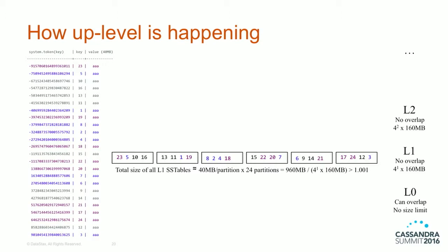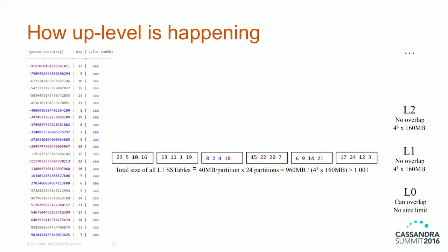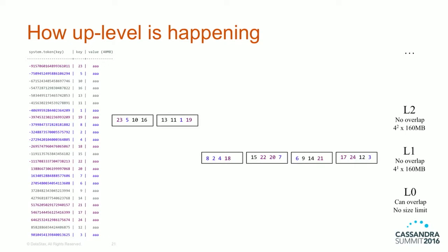We pick the first two SSTables as compaction candidates, available for the compaction executors to pick up. With multiple concurrent compactor threads, each one can pick an SSTable and in parallel up-level them. Now we have two L2 SSTables and four L1 SSTables. Calculating the compaction score again, we're in a steady state — a happy state — unless more flushes happen.